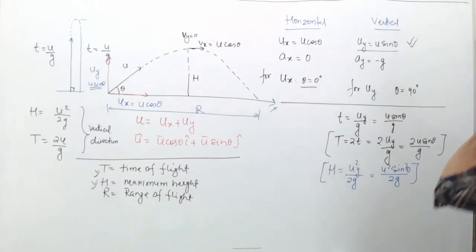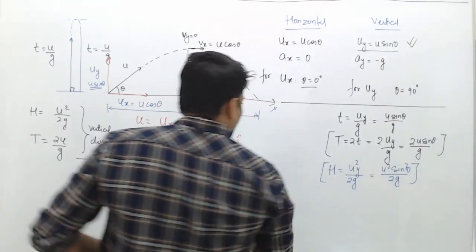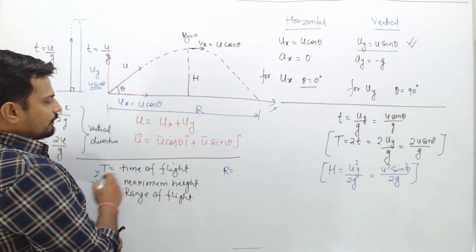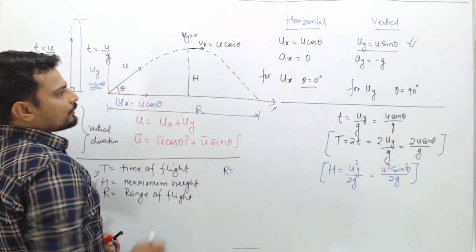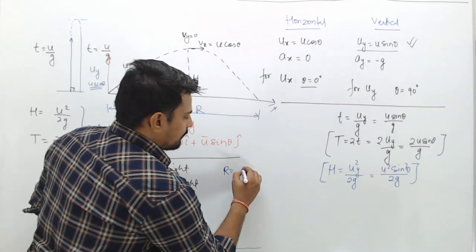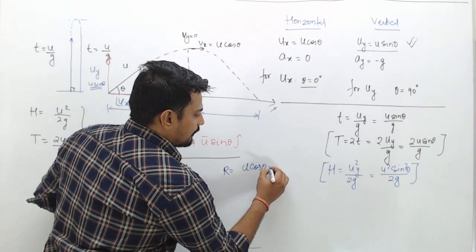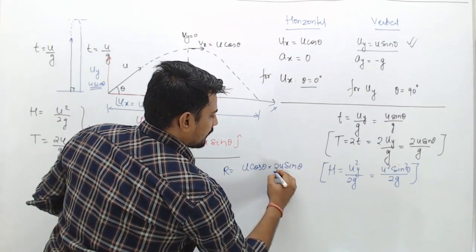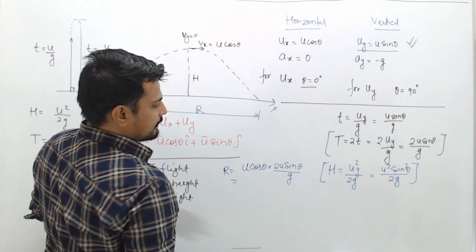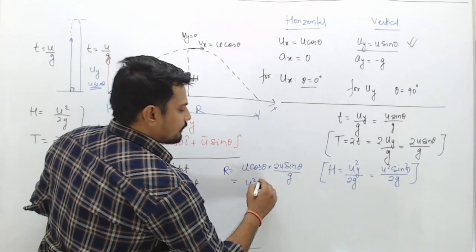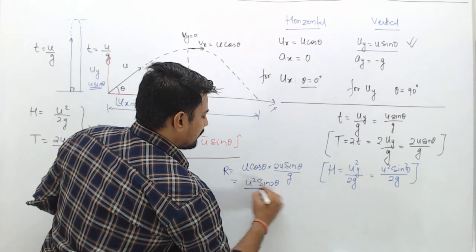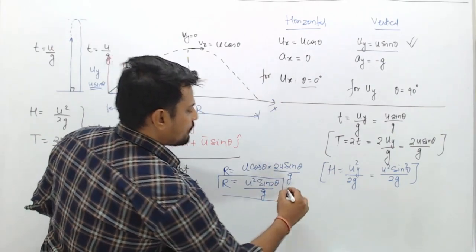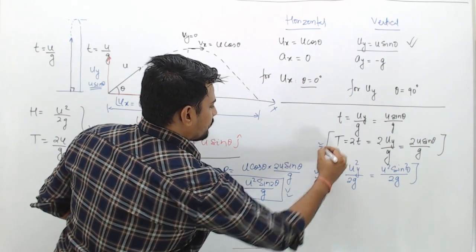For the range, since we know the time of flight, range equals horizontal velocity times total time: R = u_x × T = u·cos(θ) × 2u·sin(θ)/g. Using the identity 2·sin(θ)·cos(θ) = sin(2θ), the range simplifies to R = u²·sin(2θ)/g.